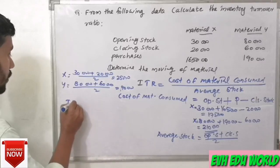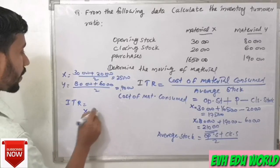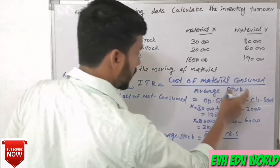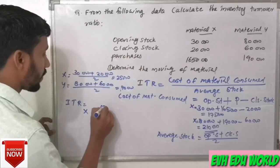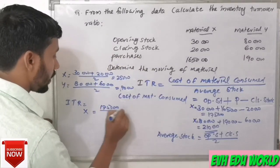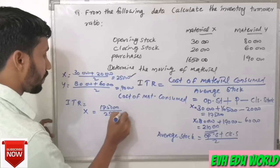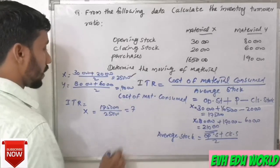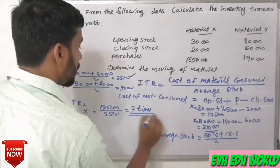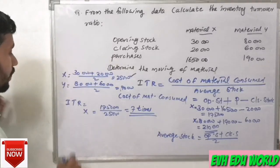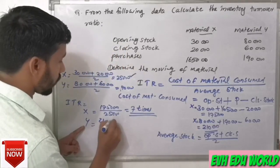Now we calculate the inventory turnover ratio. For Material X, the cost of material consumed is 1,75,000 divided by the average stock of 25,000.